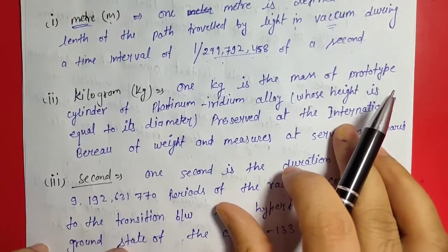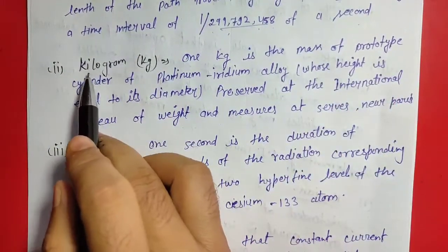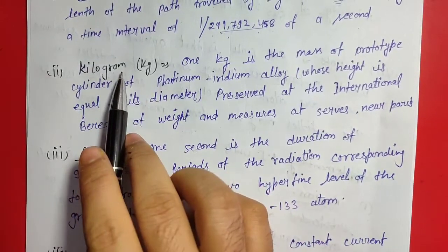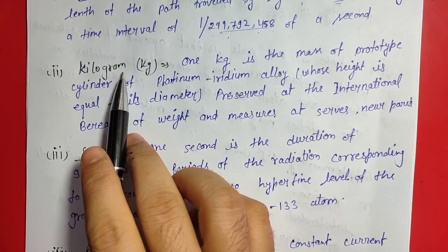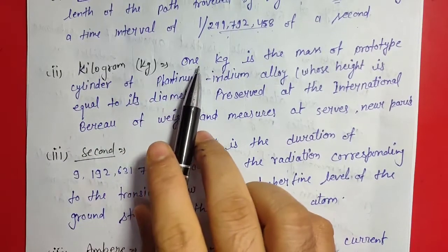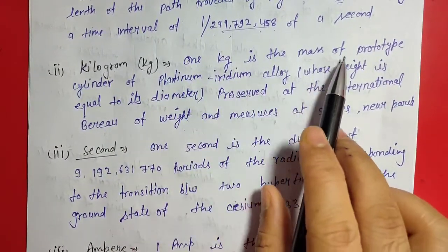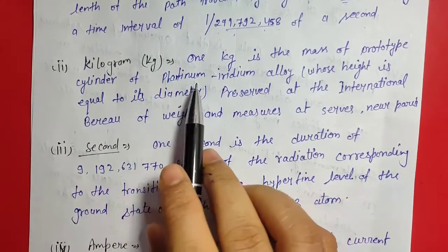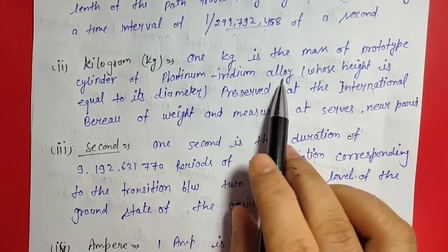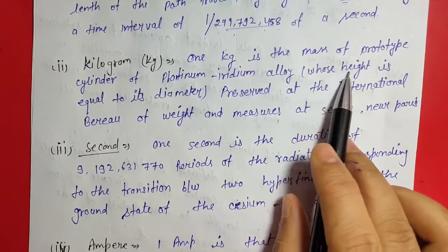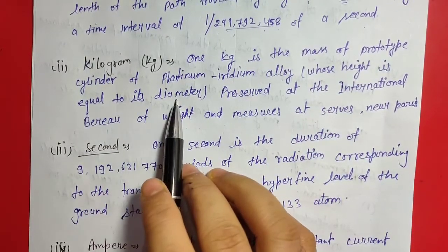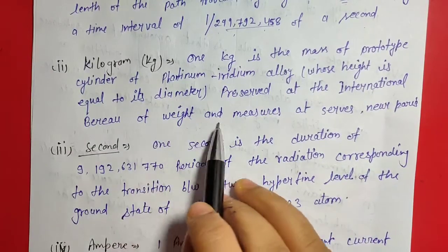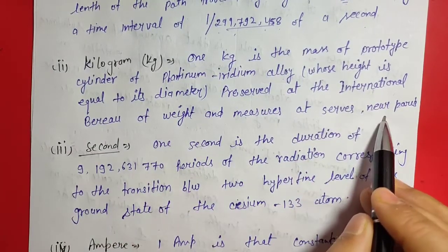Next, the definition of kilogram. One kilogram (kg) is a unit of mass. One kg is the mass of a prototype cylinder of platinum-iridium alloy whose height is equal to its diameter, preserved at the International Bureau of Weights and Measures at Sèvres, near Paris.